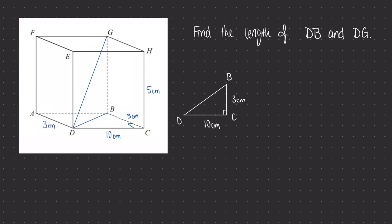Now that we have our right angle, we can see that we're asked to find the third missing side when we've already been given two sides of the right angle. This question is going to utilize Pythagoras. So we can do 3 squared plus 10 squared equals our missing side length x squared. And if we solve this by square rooting both sides, we would find that x is equal to the square root of 109. So now that we've found the length of DB, let's make sure we remember that — I'll just put a little marker down there.